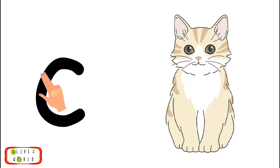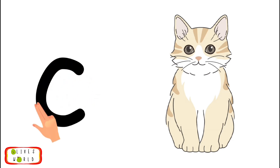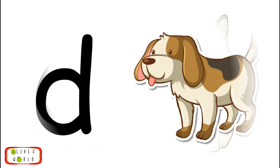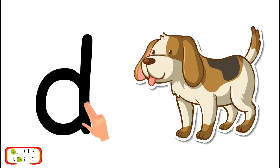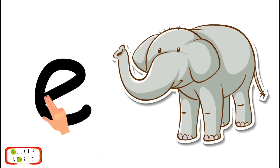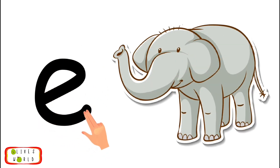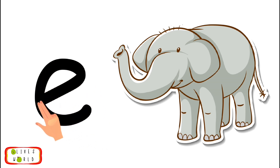C, cat, kuh. Repeat C, cat, kuh. D, dog, d. Repeat D, dog, d. E, elephant, eh. Repeat E, elephant, eh.